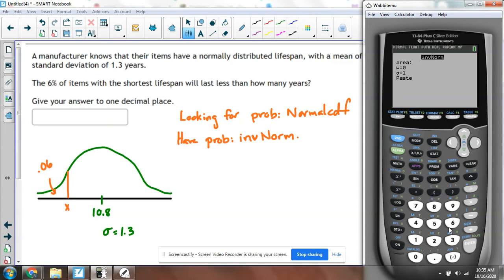The important thing to know here is that when you're using it, you're giving the area, and it always wants values to the left. I'll explain the importance of that in just a second, because right now it's straightforward. The area to the left of my value is 0.06, my mean is 10.8, and my sigma is 1.3.